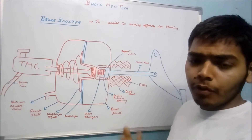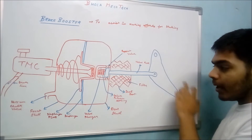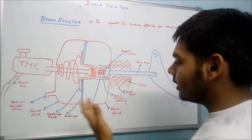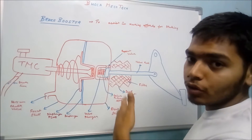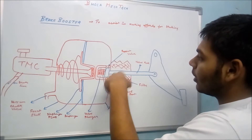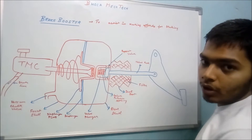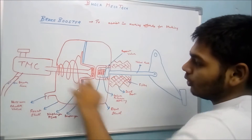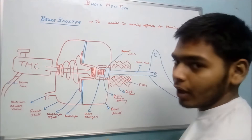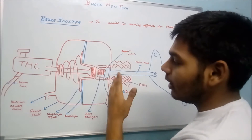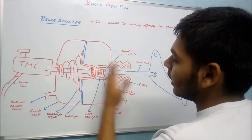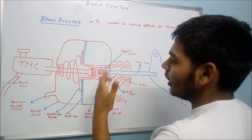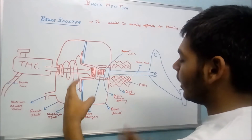Let's talk about the components of the brake booster using this basic diagram. First, there is the brake pedal on which you apply force. Then there is a valve rod and a dust boot, which prevents dust from entering the brake booster. There is an air filter that filters the air entering the brake booster. Then there is a poppet valve and a valve return spring so that the push rod can return. The valve plunger transmits force to the push rod. Then there is a diaphragm — a flexible membrane — so that the diaphragm plate can move in the axial direction.